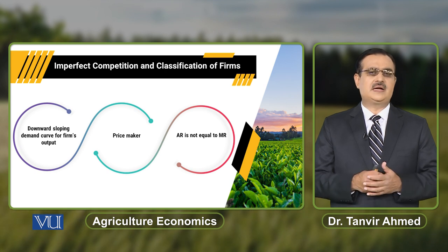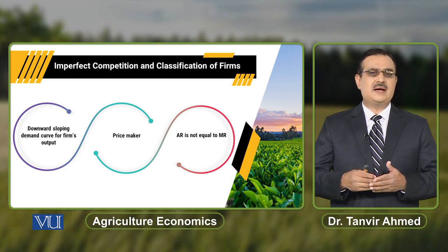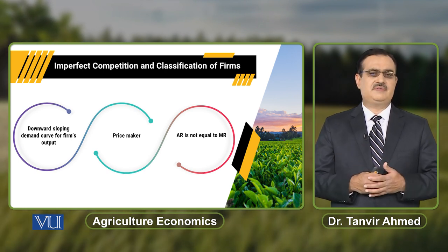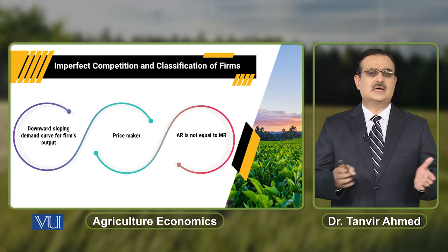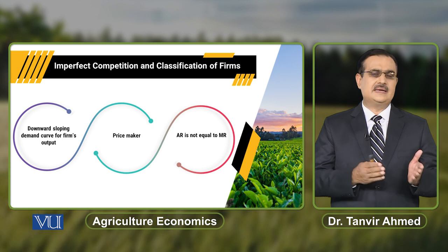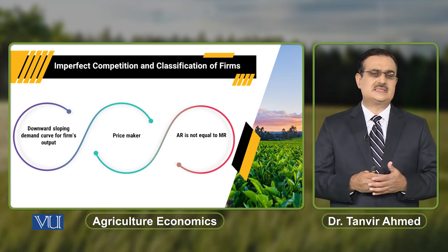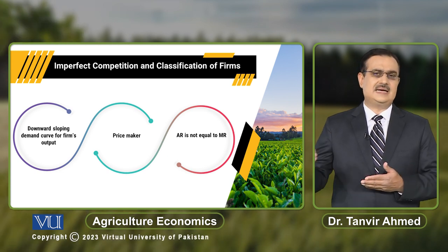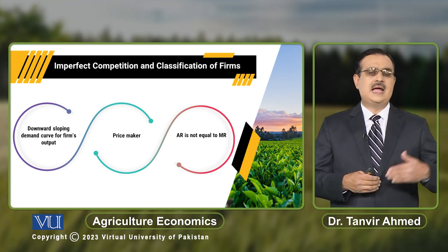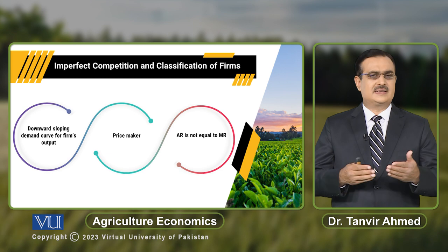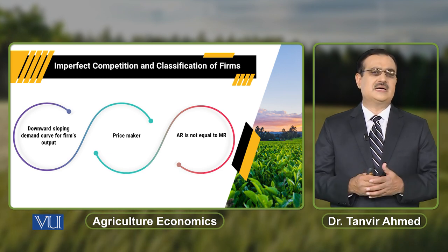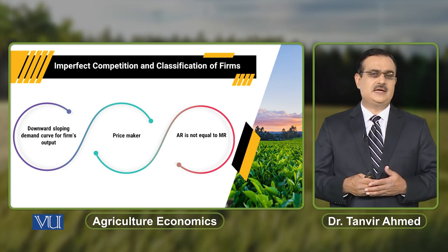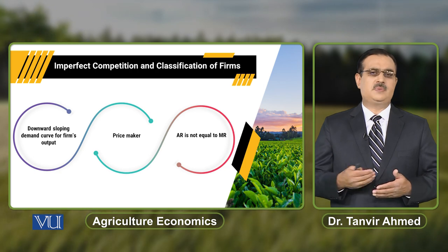In the case of imperfectly competitive market, the average revenue against each level of output will be greater than the marginal revenue. To conclude, we make a categorization of firms on the basis of certain characteristics. Those characteristics categorize the firm under the subheading of perfectly competitive market and imperfectly competitive market. When we study those characteristics in further detail, we can categorize the markets under the subheadings of monopoly, oligopoly, and monopolistic competition.